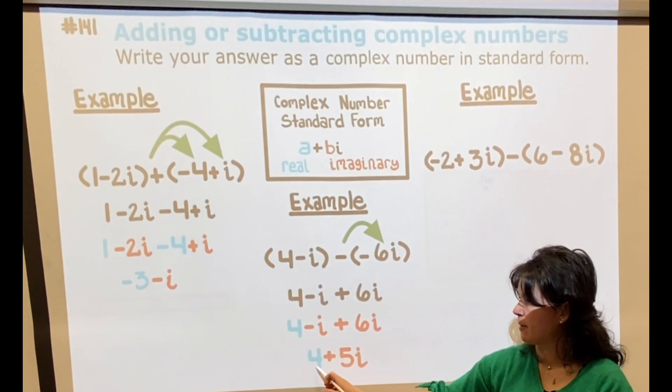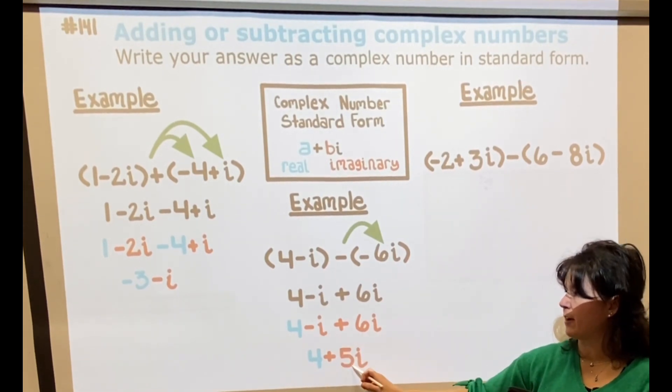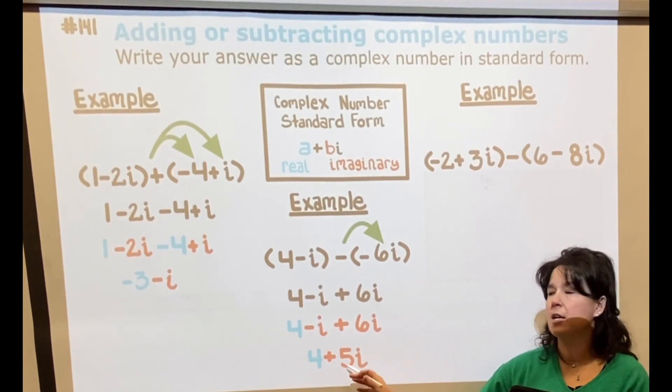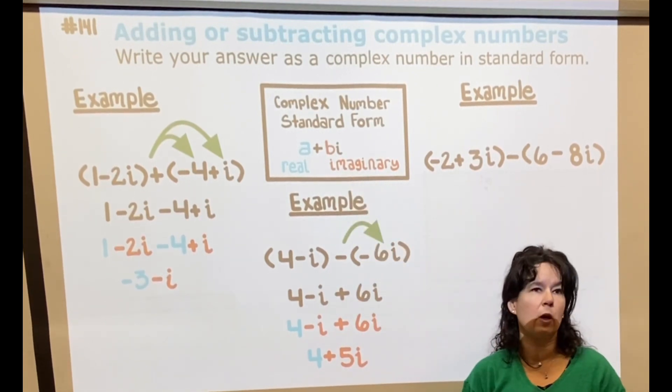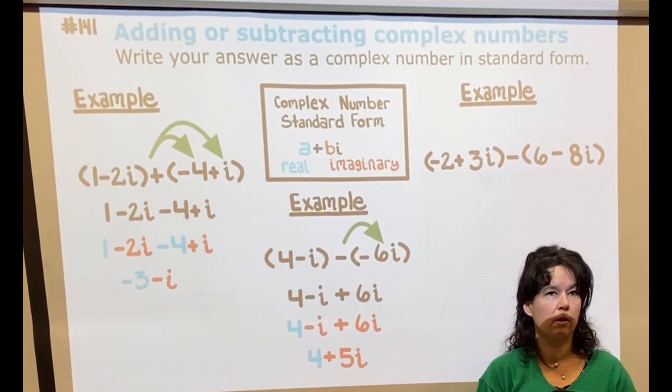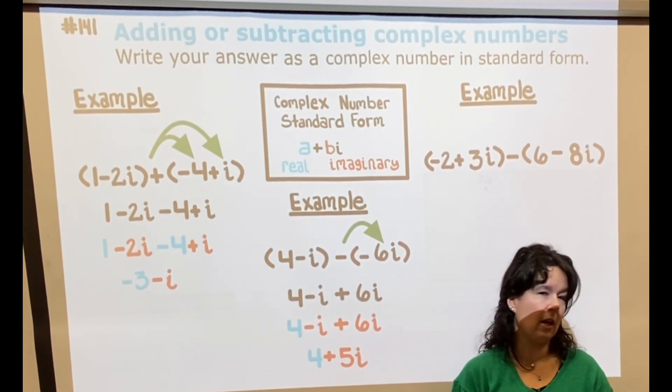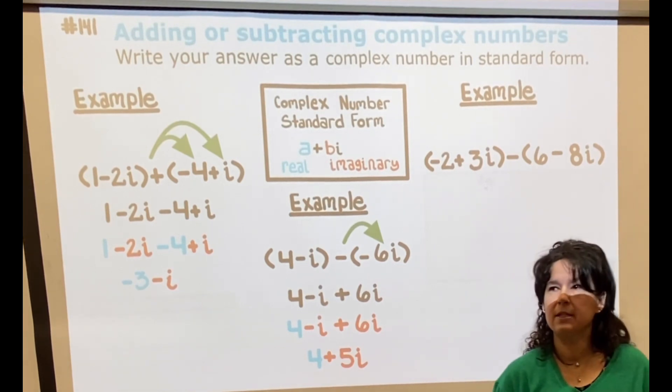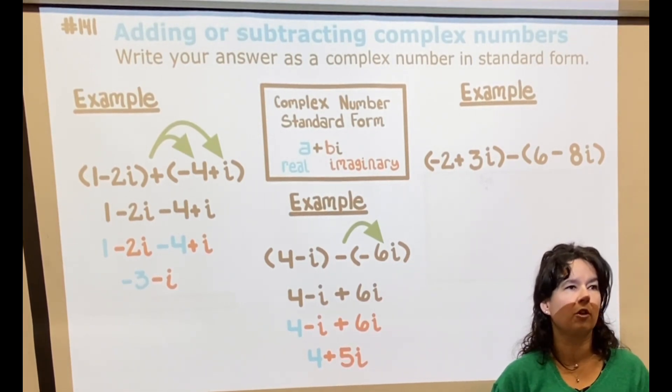So I still have my 4, and now I have 5i. Again, if you wrote 5i plus 4, it's not wrong, it's just not in the format that we prefer—like we capitalize the first letter of your name. I might be able to read what your name is even if it wasn't capitalized; it would just look a little funny.